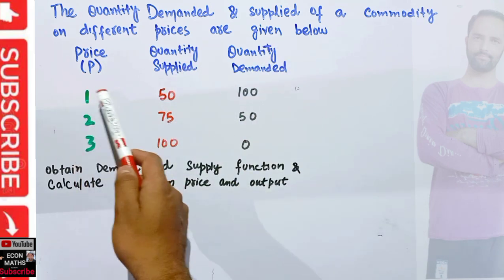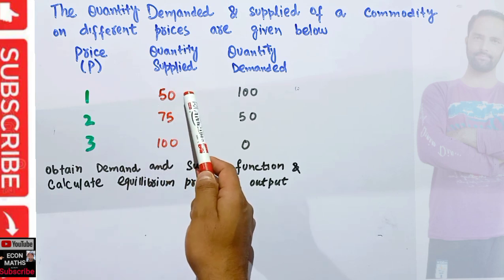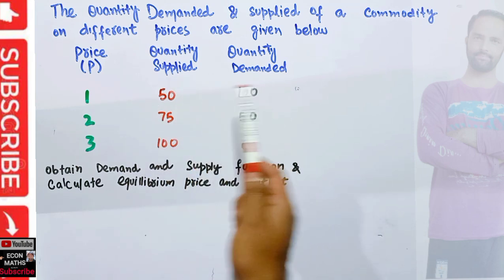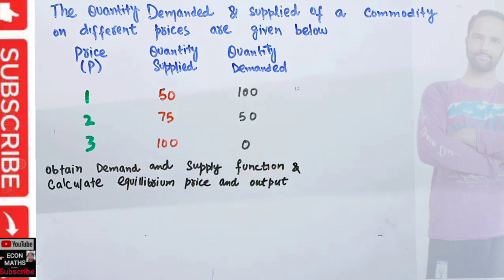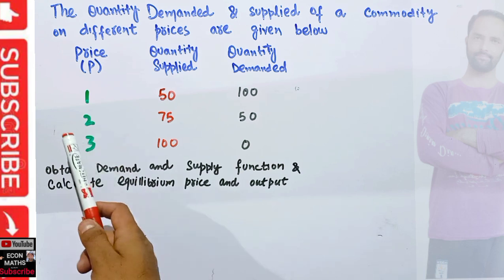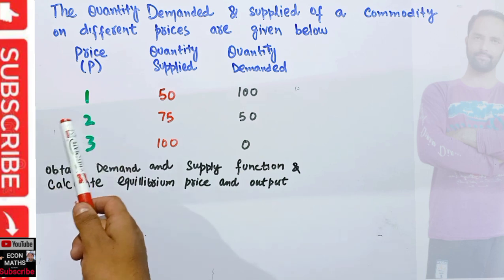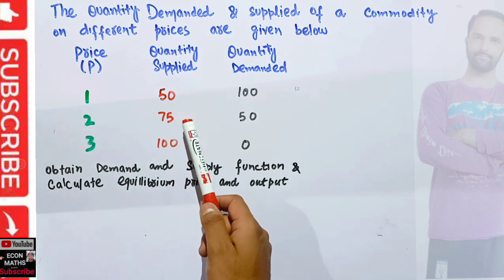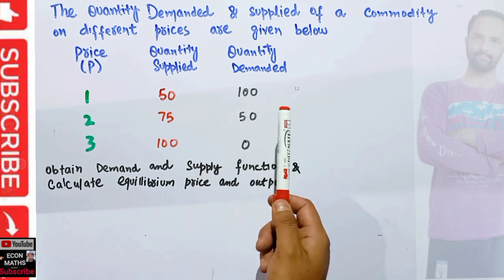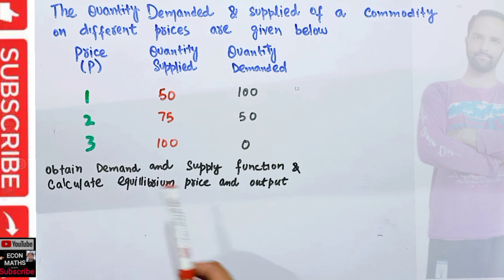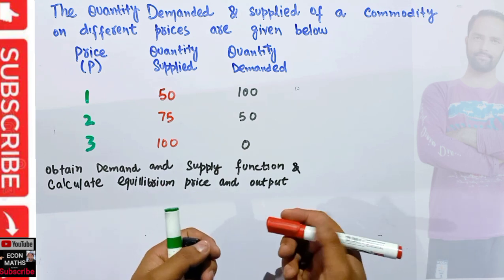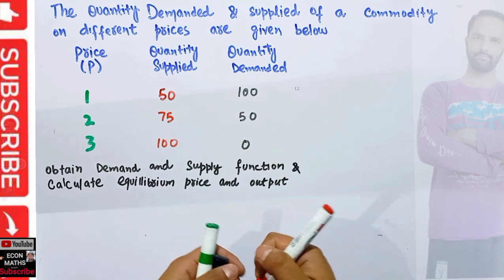At a price of $1, quantity supplied is 50 and quantity demanded is 100 units. Similarly, at a price of $2, quantity supplied is 75 units and quantity demanded is 50 units and so on. We have to obtain the demand and supply functions and also calculate the equilibrium price and quantity.